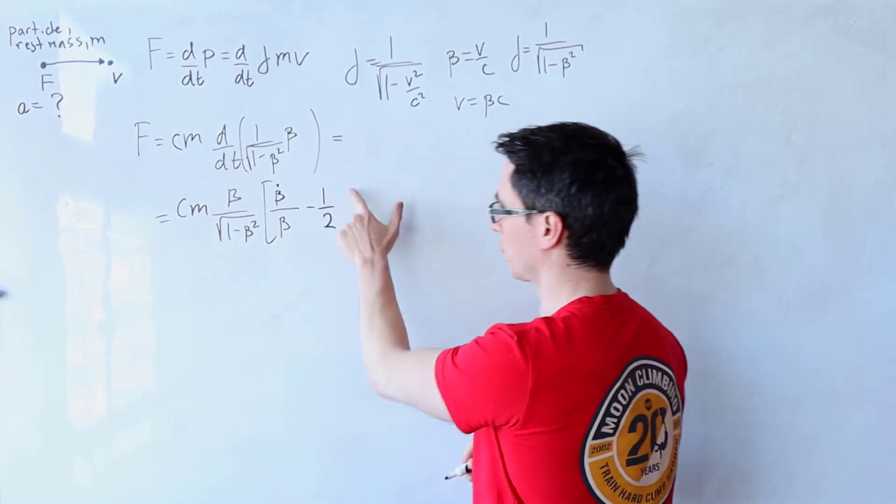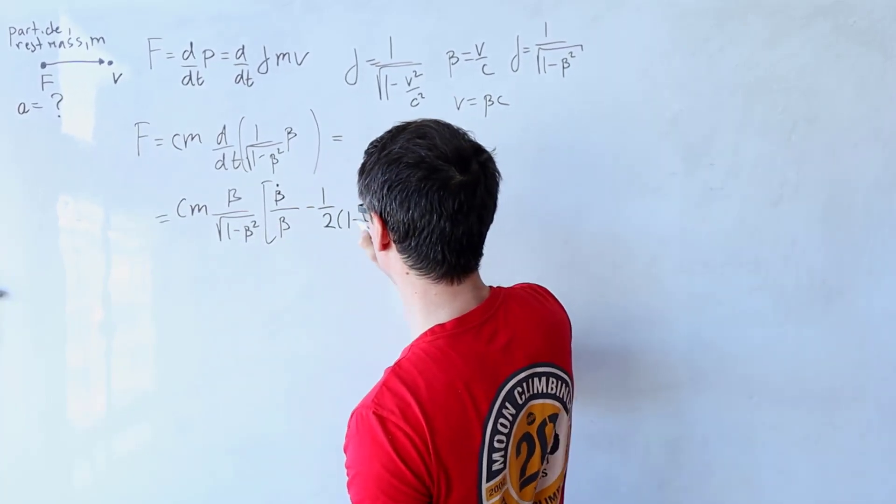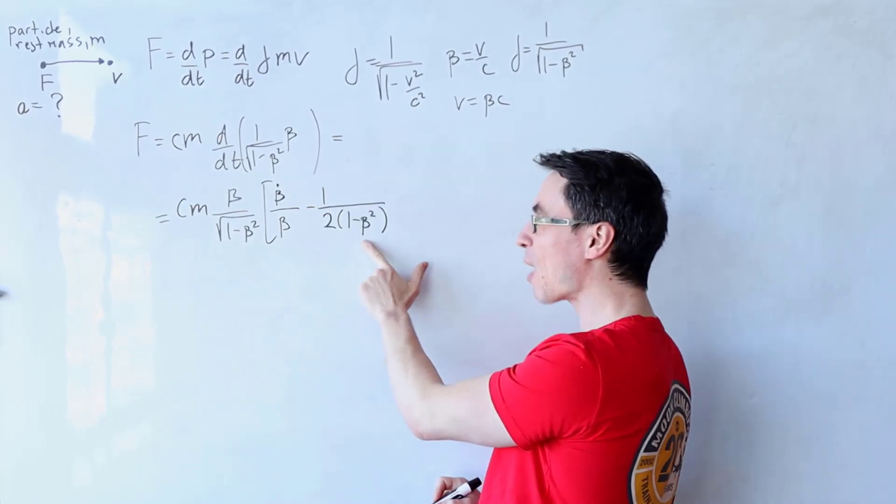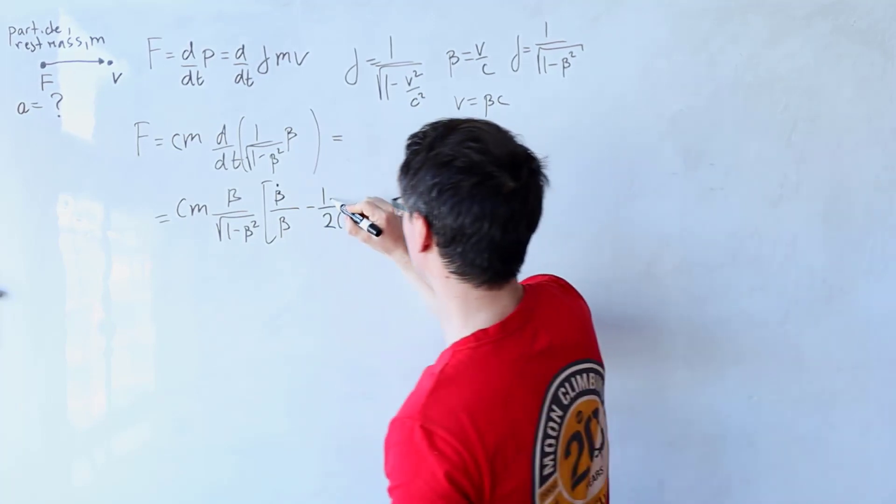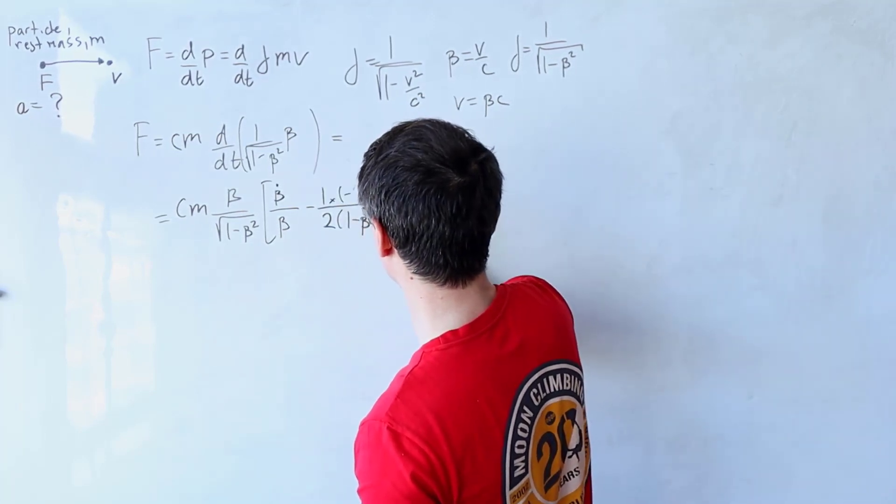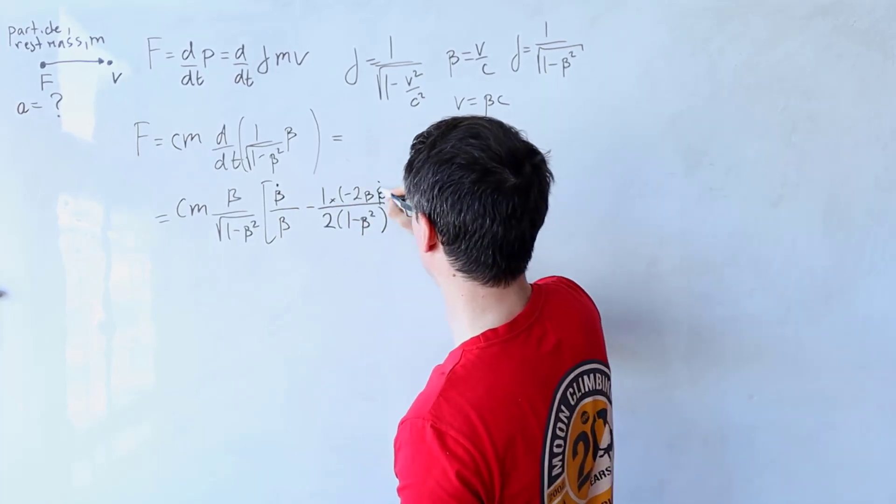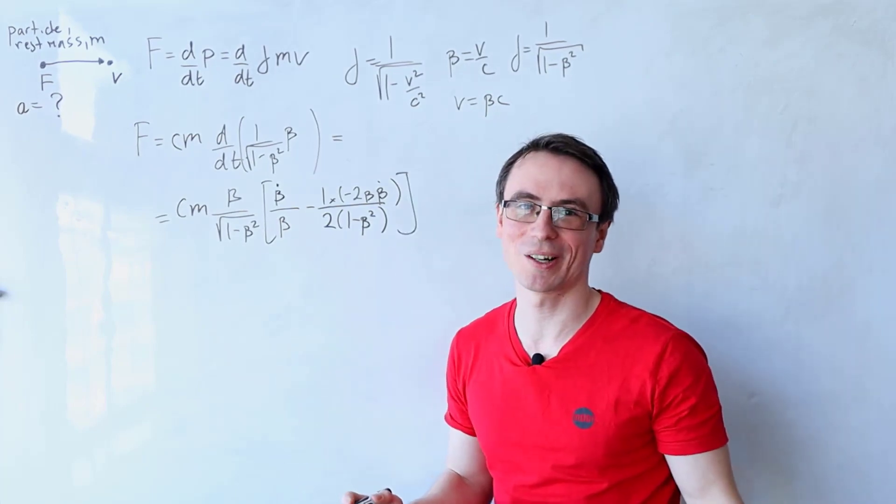At the bottom, I'm just going to copy down the factor, which is one minus beta squared. And at the top, I would differentiate this with respect to the variable, which is just going to give me minus two beta multiplied by beta dot by the chain rule. And we're done with this derivative and that did not take very long.